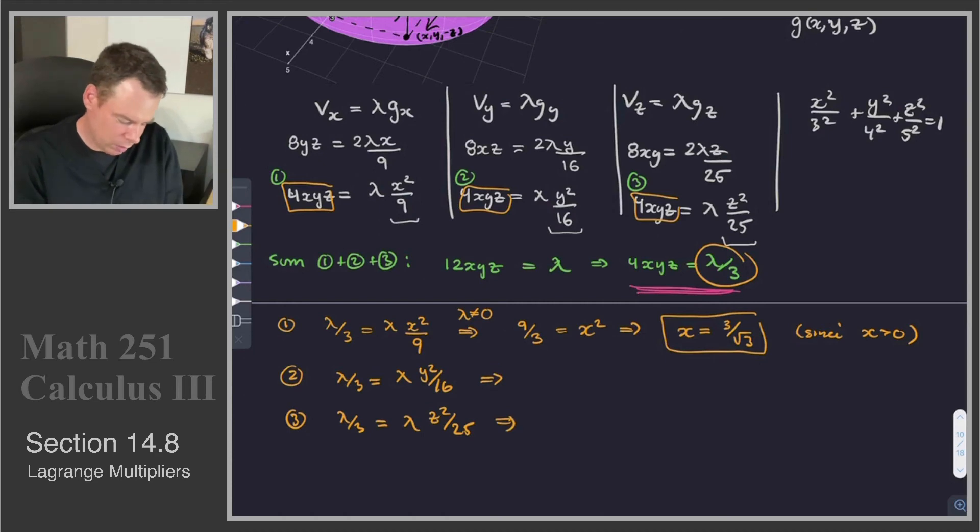And then also plugging into equation 3 gives me λ/3 = λz²/25. And again, λ is not equal 0. So this becomes 16/3 = y², or y = 4/√3.